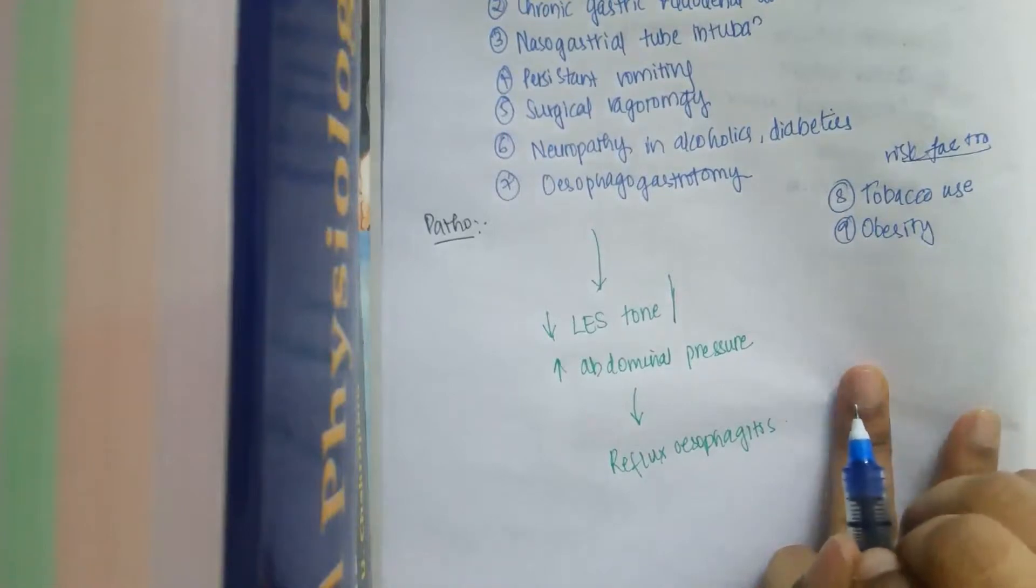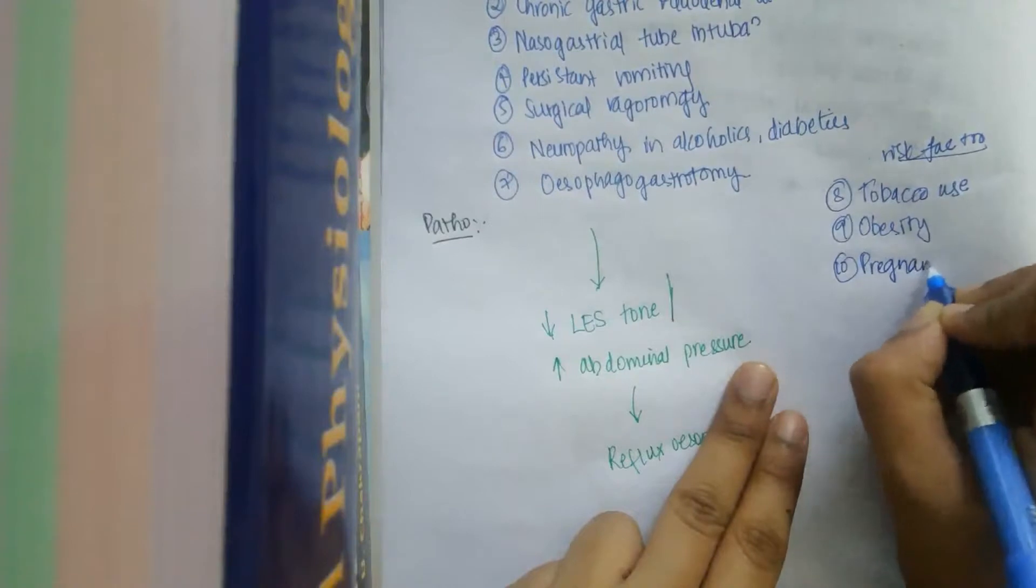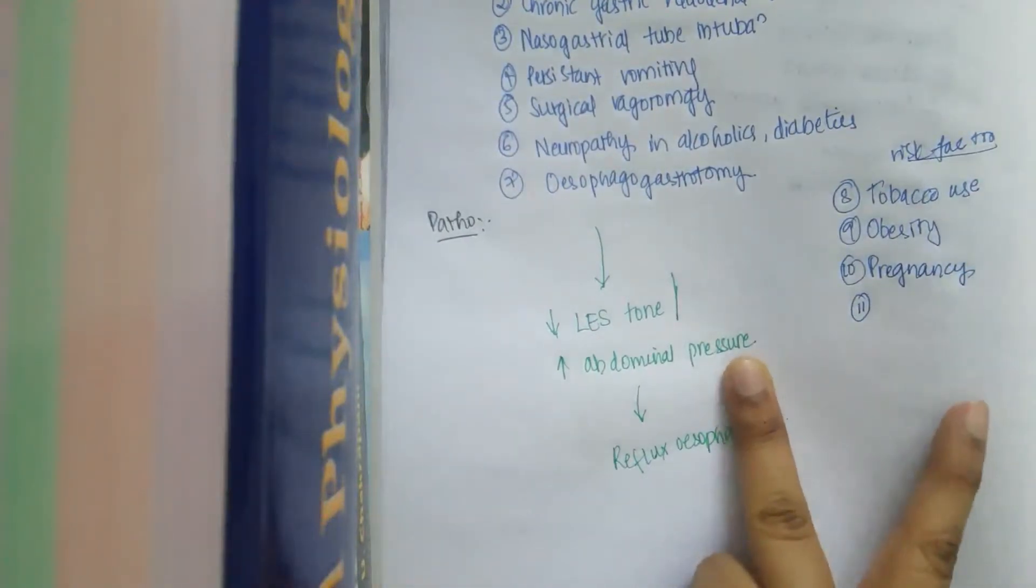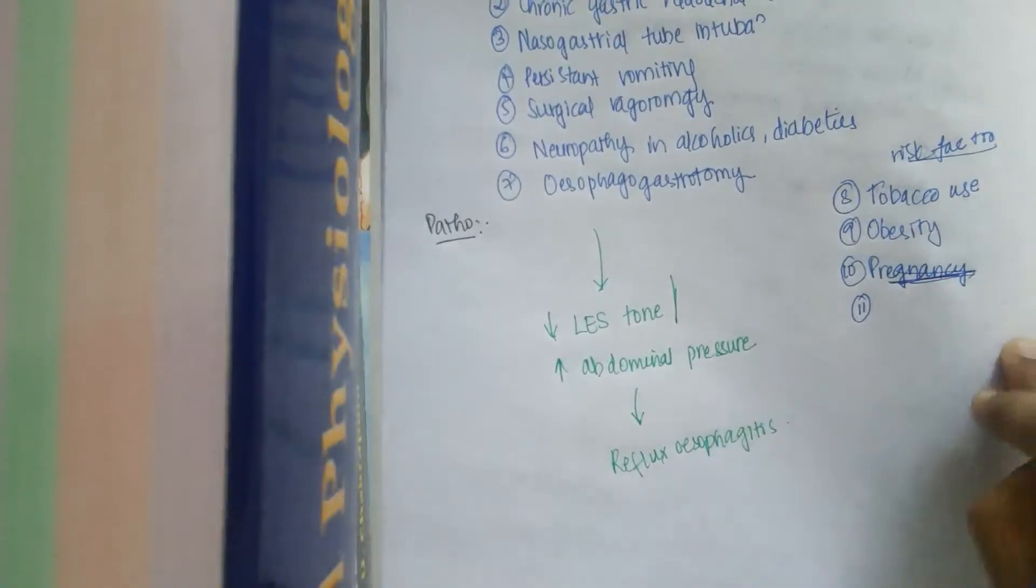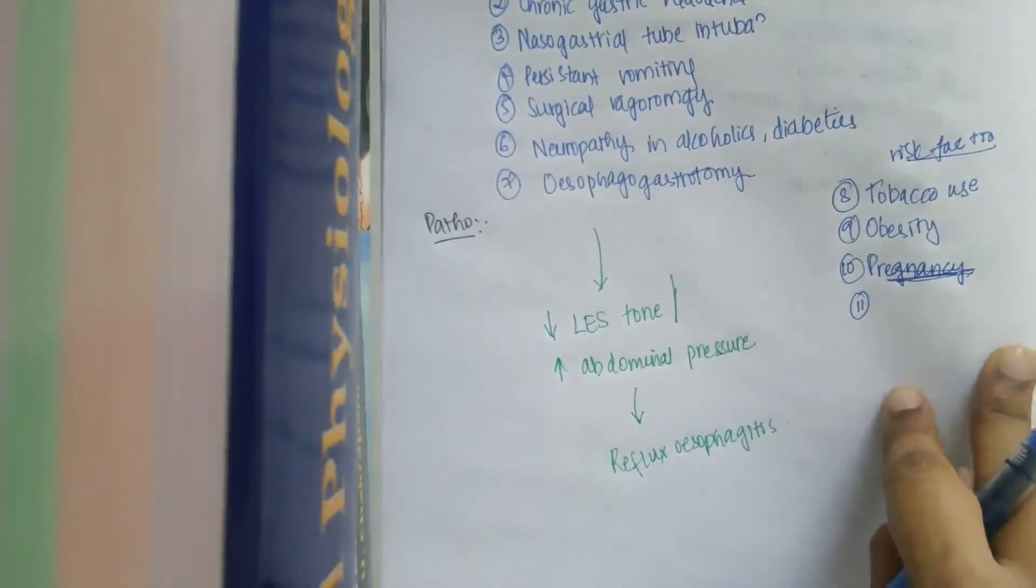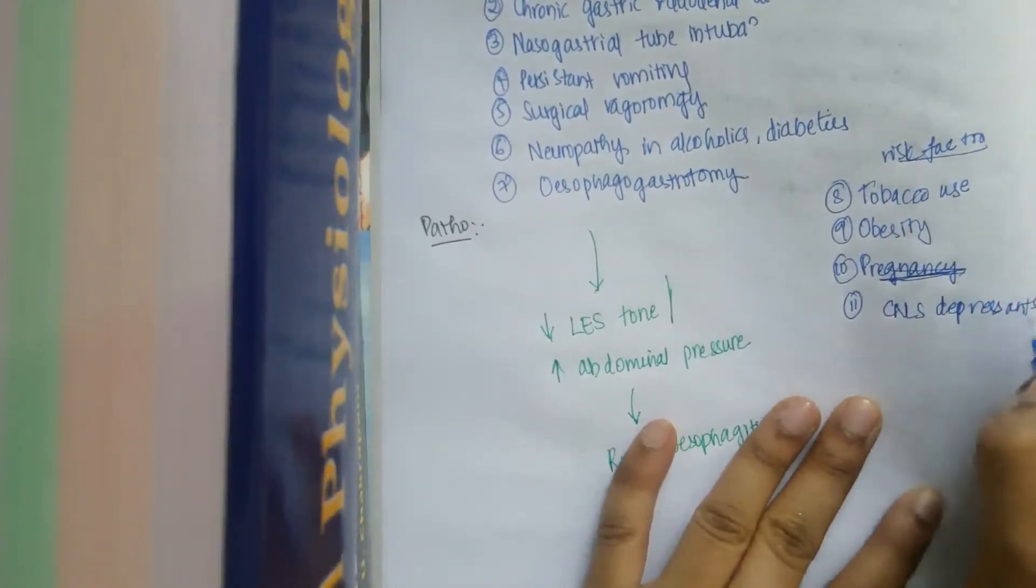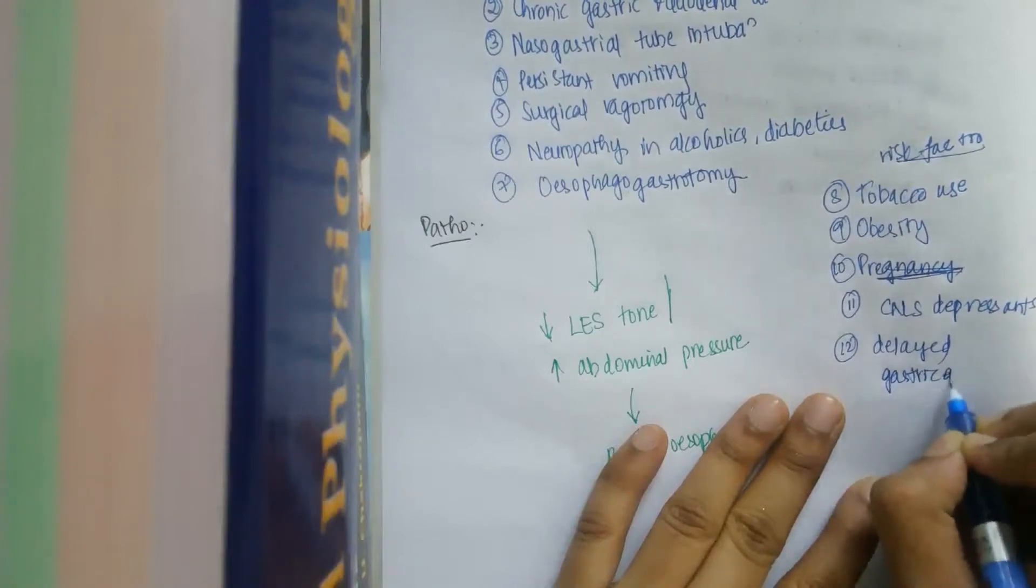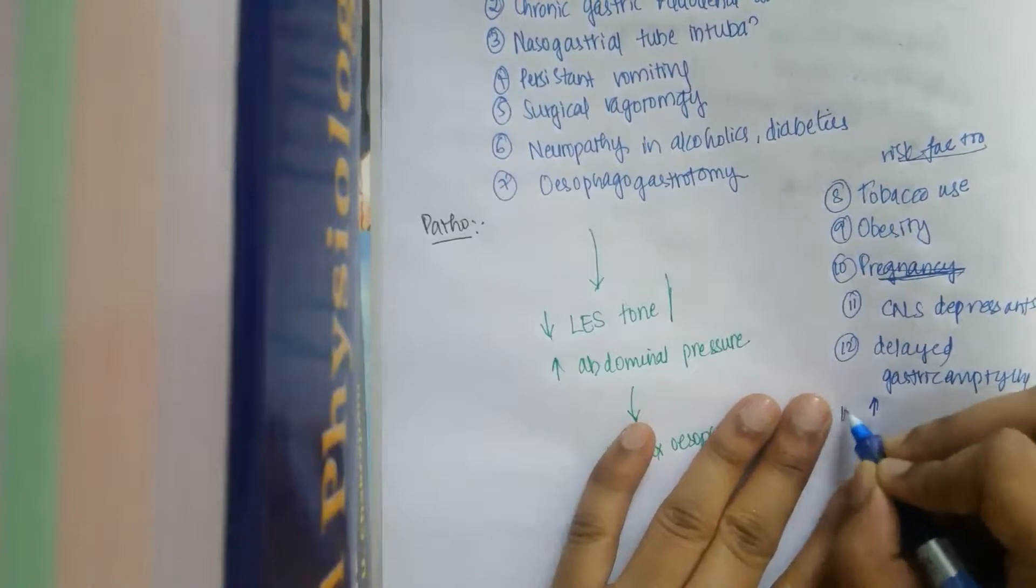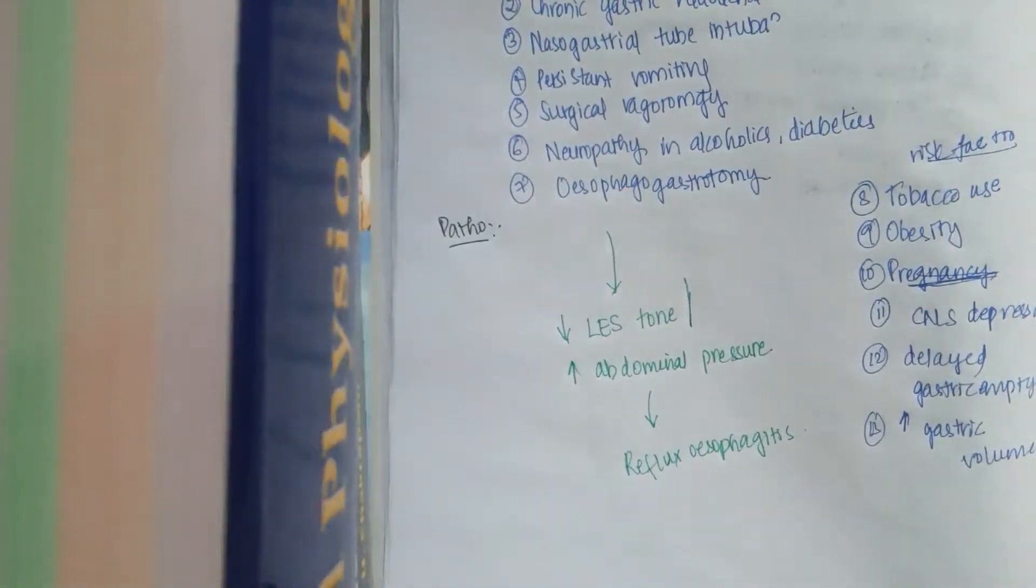I have mentioned about hiatal hernia. I didn't mention about pregnancy. In pregnancy, there is increase in abdominal pressure, I have already mentioned in your previous class. This may lead to reflux esophagitis, though it is physiological but not pathological, but sometimes it will become pathological. It may be due to CNS depressants or delayed gastric emptying or increased gastric volume. All these are the risk factors of reflux esophagitis.